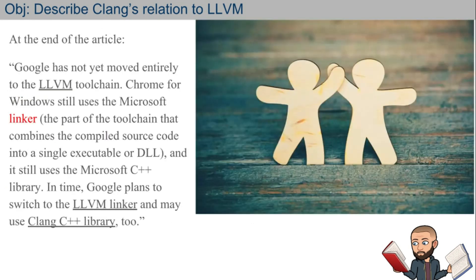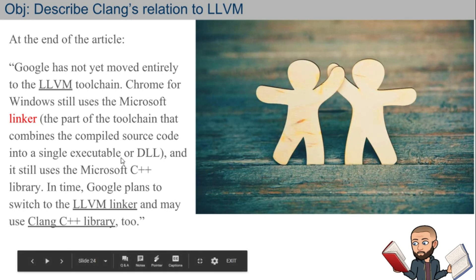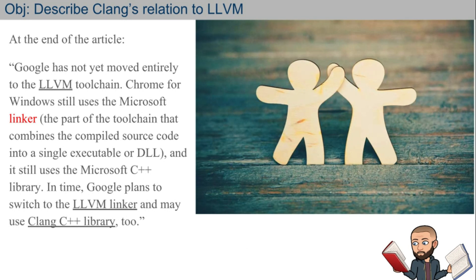At the end of the article, it says Google has not yet moved entirely to the LLVM toolchain. Chrome for Windows still uses the Microsoft Linker — the part of the toolchain that combines compiled source code into a single executable or DLL. LLVM is still using the Microsoft C++ library, and in time Google plans to switch to the LLVM linker, especially when running Chrome on a Microsoft operating system.